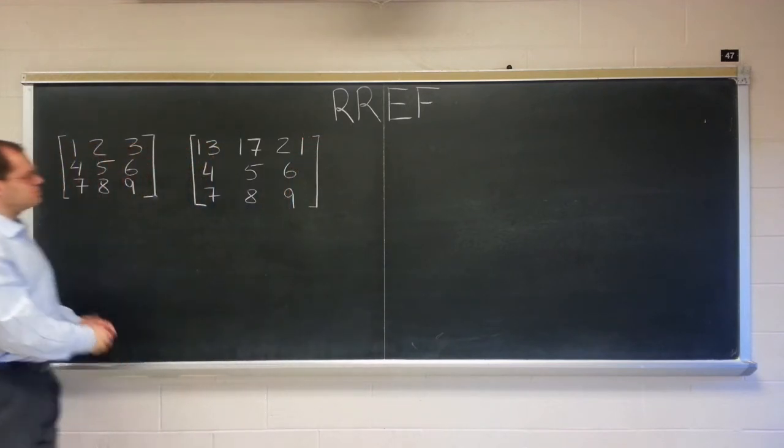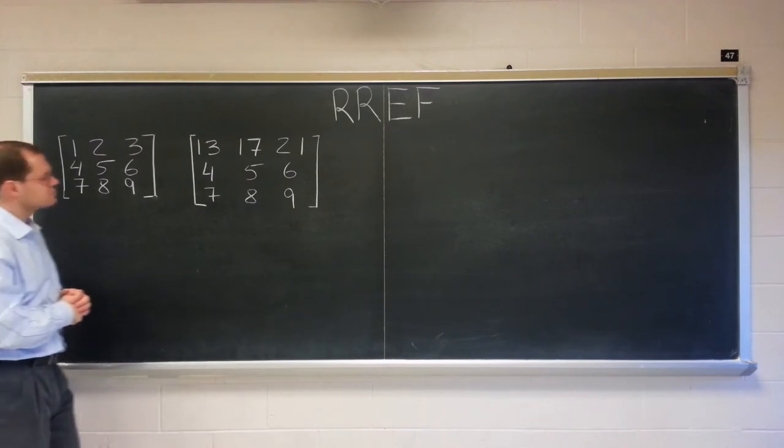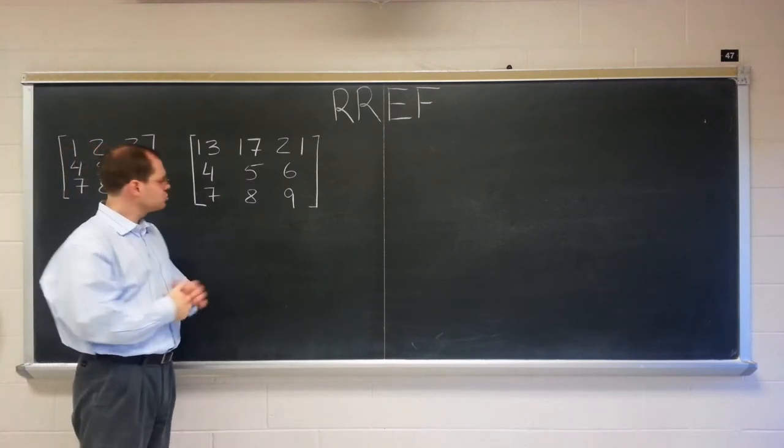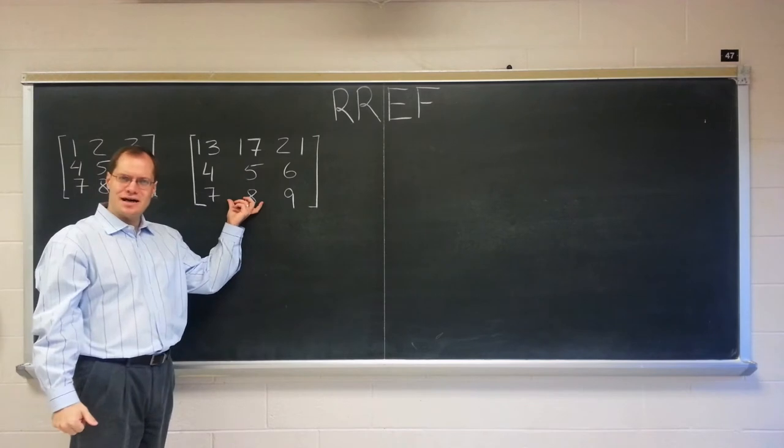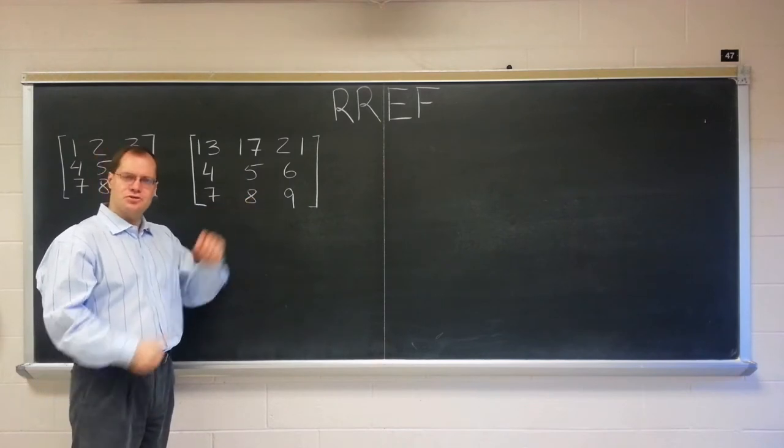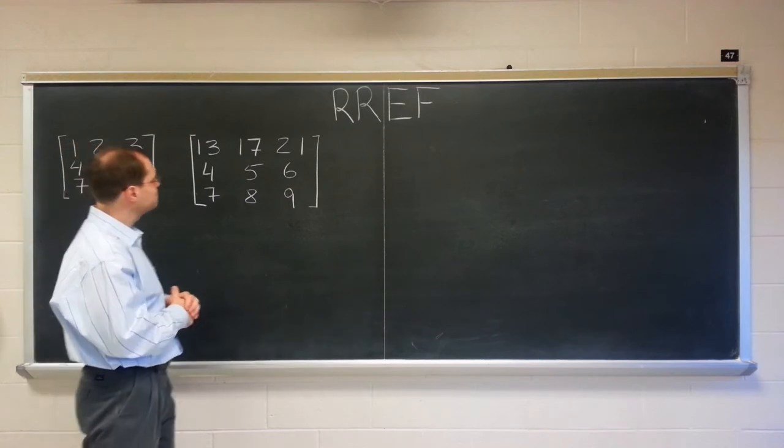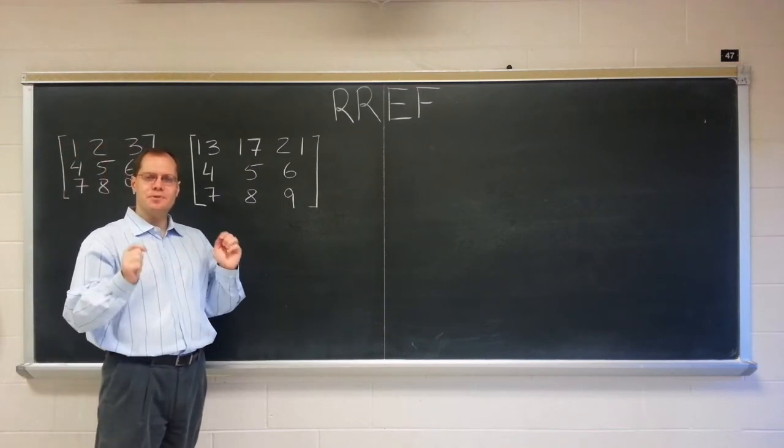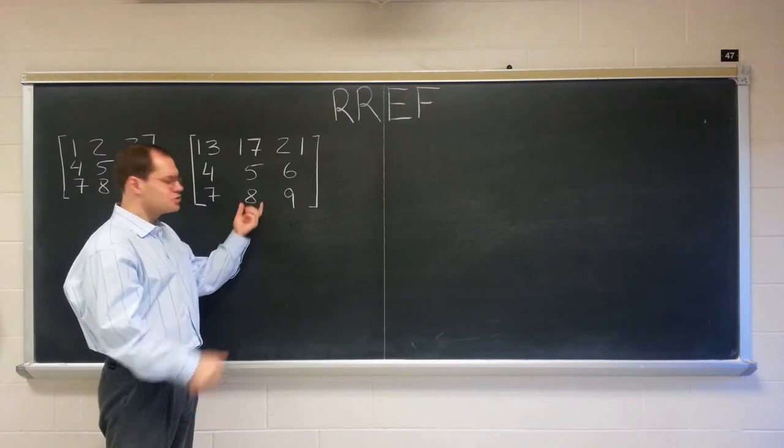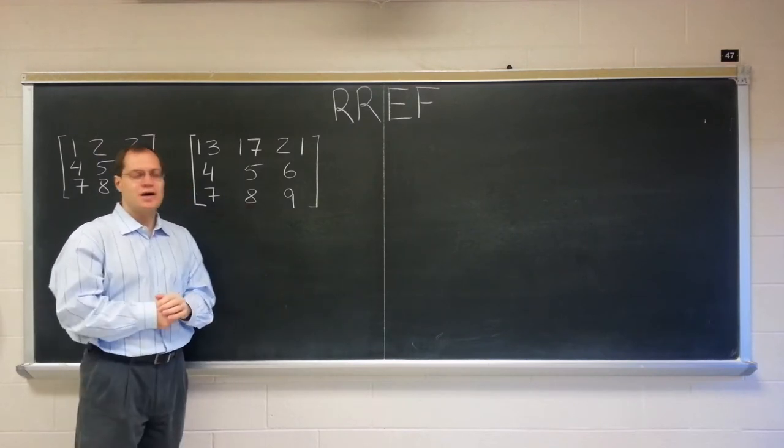Now, what's the relationship among the columns? Is it still true that the middle column is the average of the other two? Let's see. Yes, it is still true. The relationship among the columns was preserved by our row operation.